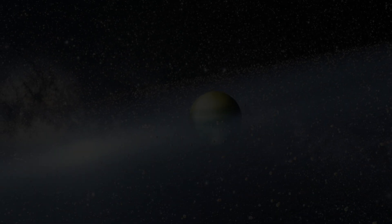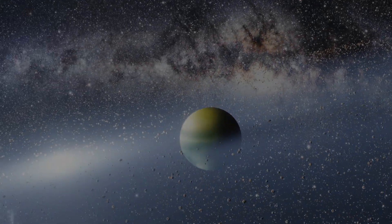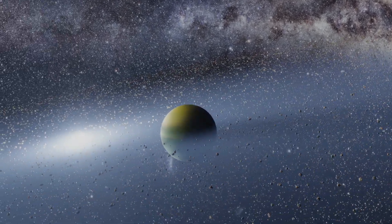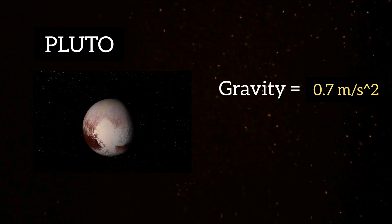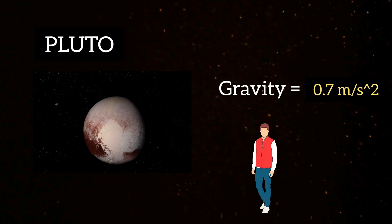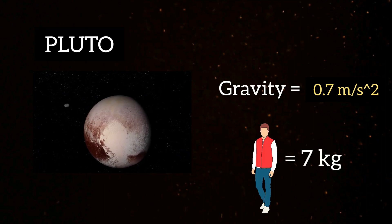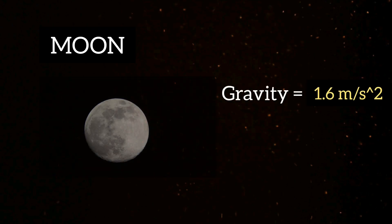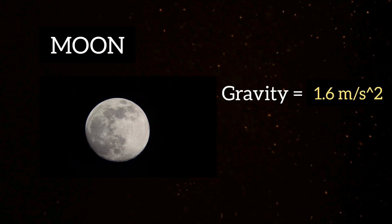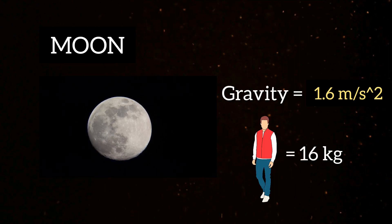This covers the weight of a person on all 8 planets. Now let's see the weight on dwarf planet Pluto and on the Moon. Pluto, now considered a dwarf planet, has a gravity of around 0.7 meters per second square, which is 0.071 times the Earth — so the person's weight will be 7 kg on Pluto. The Moon has a gravity of around 1.6 meters per second square, which is 0.16 times the Earth, so the person's weight will be 16 kg on the Moon.